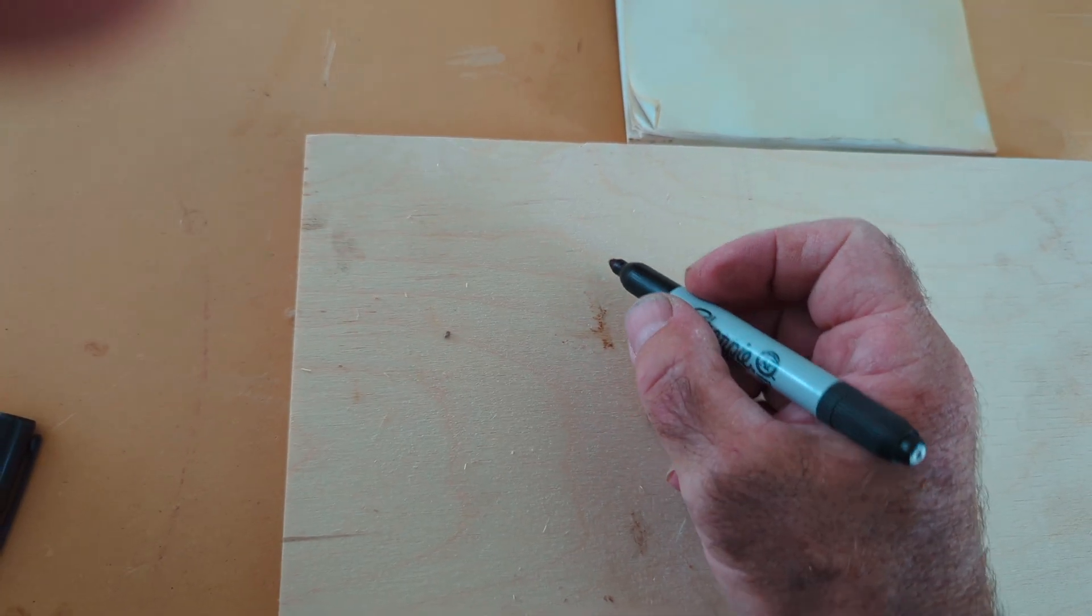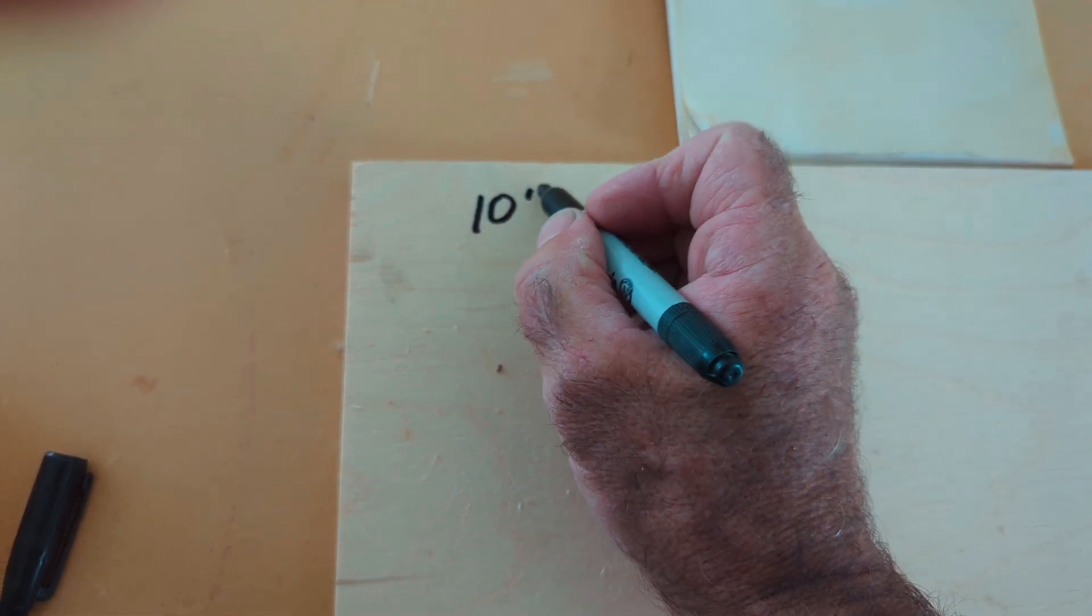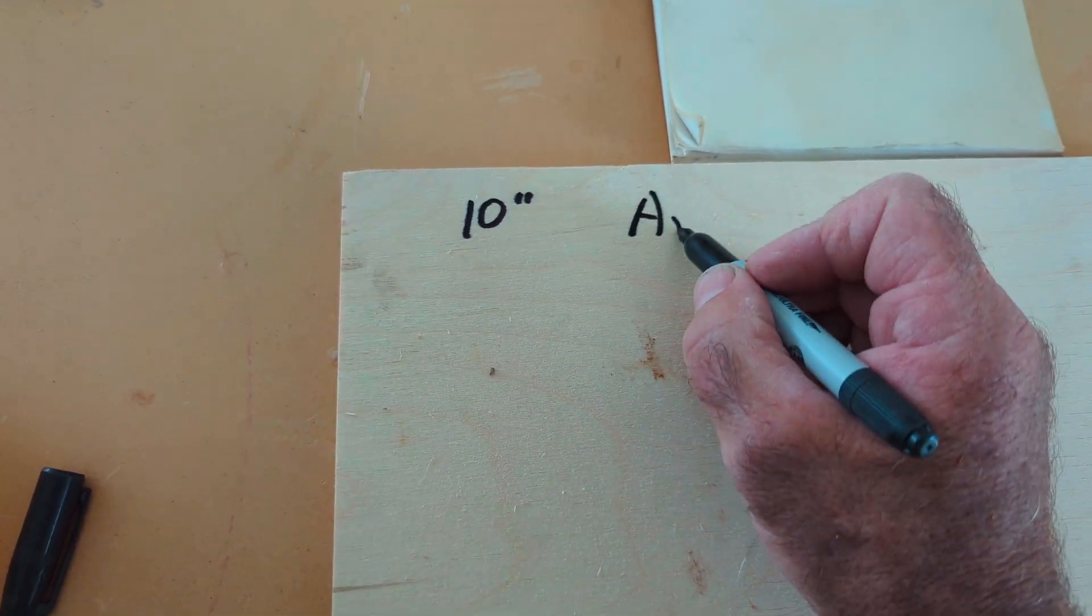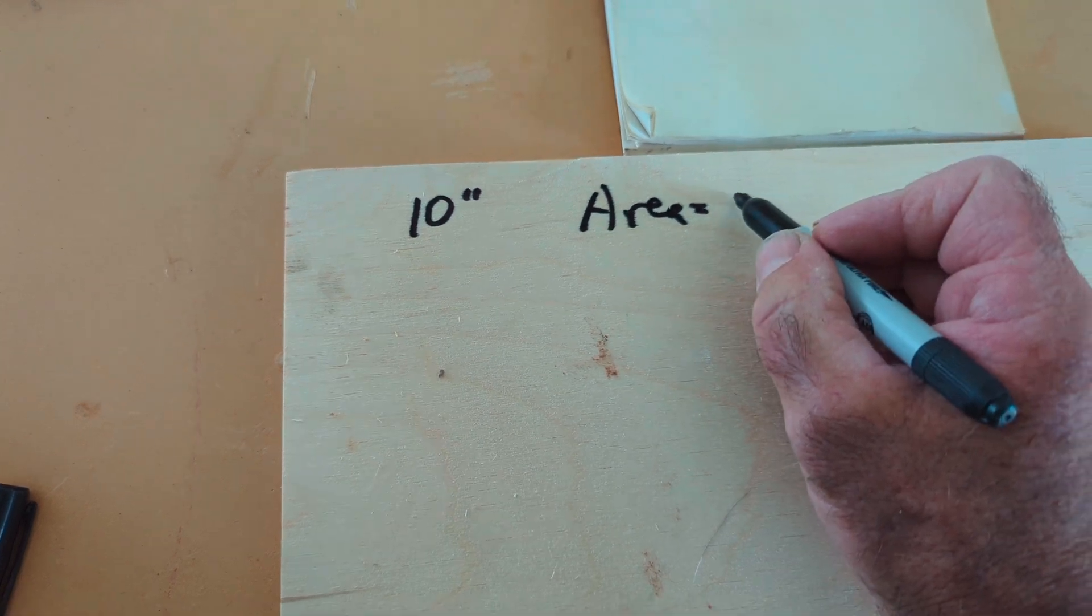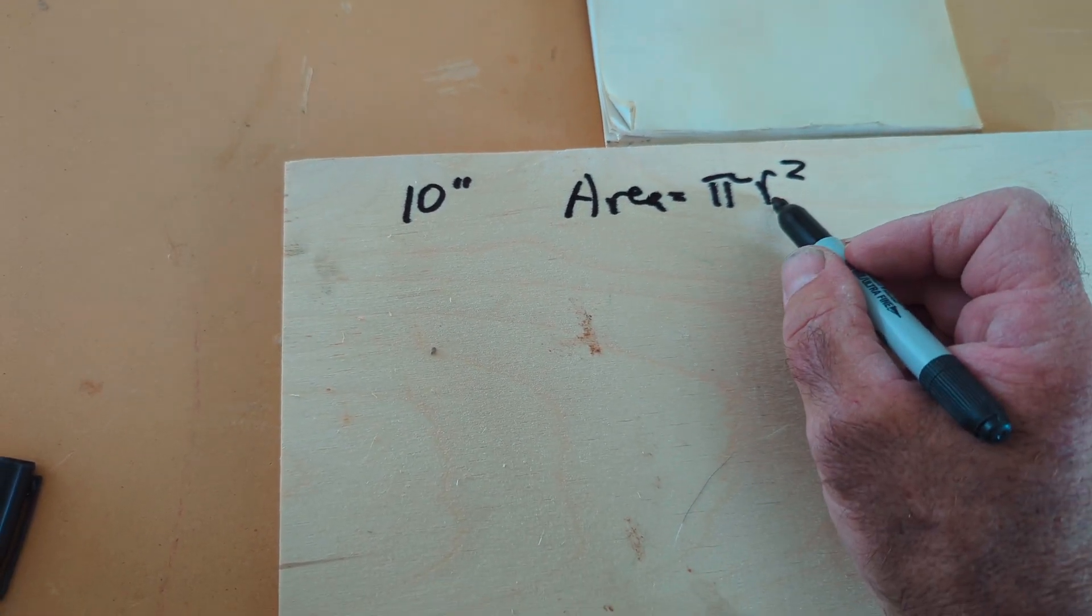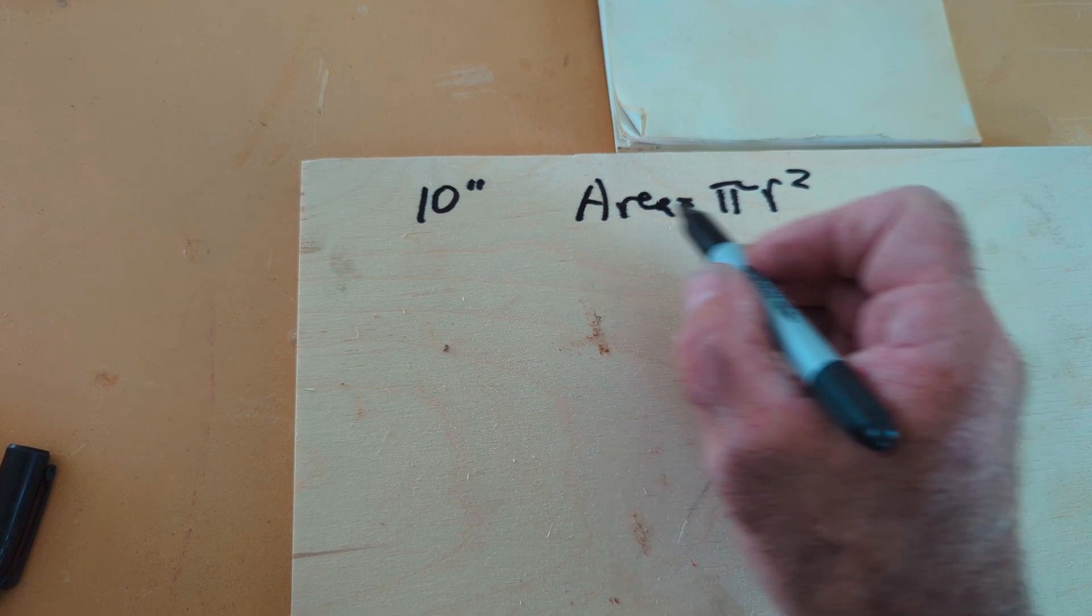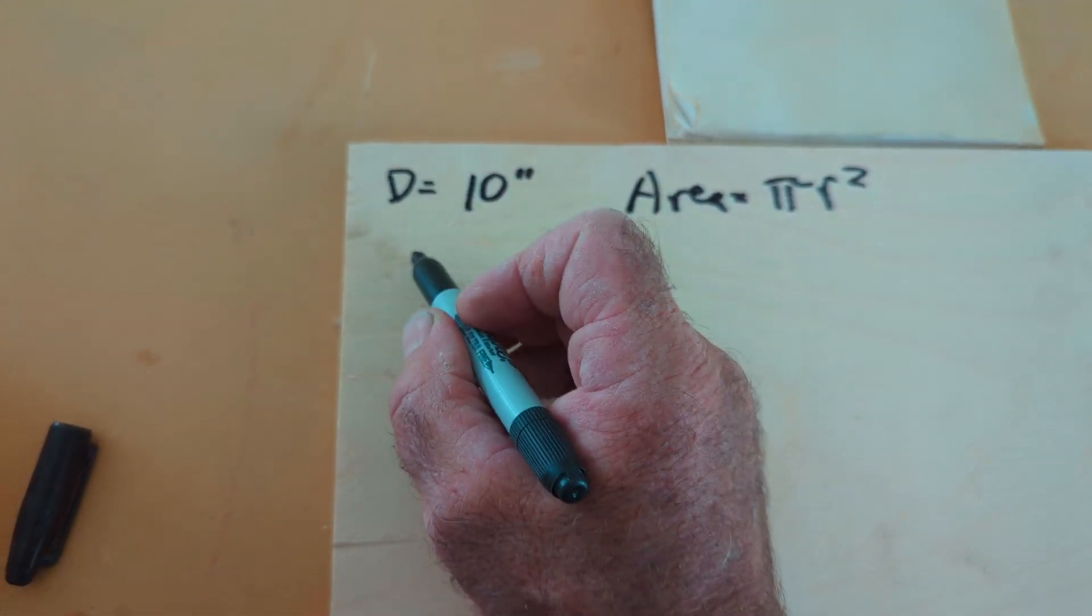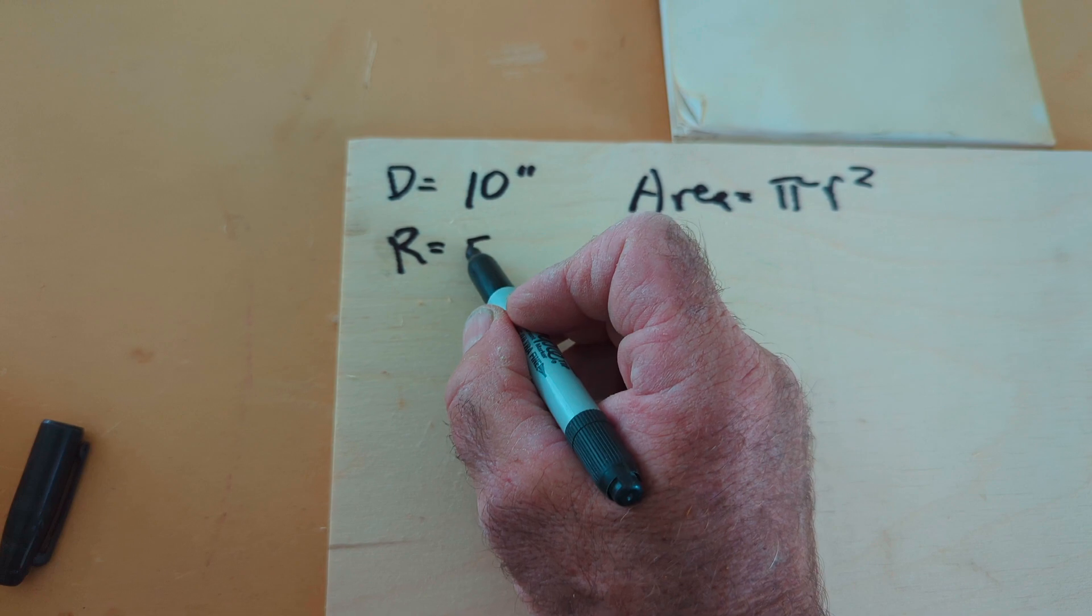Okay, here's a board and a sharpie to write on. That tube is 10 inches wide. The area of a circle is equal to pi r squared, where r is the radius. So we're going to take half of that diameter. It's 10 inches. So radius is equal to 5 inches.